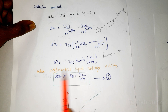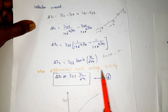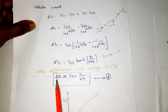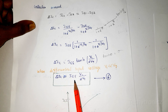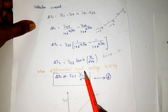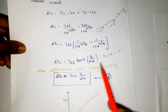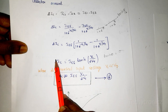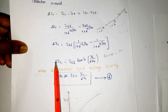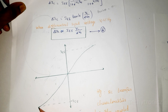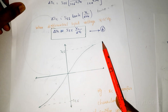When the differential input voltage V1 is much less than VT, tanh(θ) can be approximated as θ, so ΔIC ≈ IEE × (V1 / 2VT). The transfer characteristics for ΔIC can be plotted accordingly.